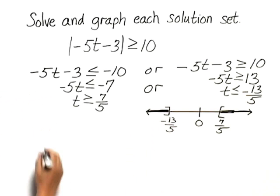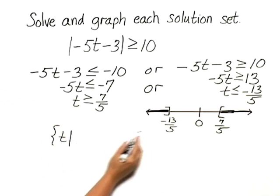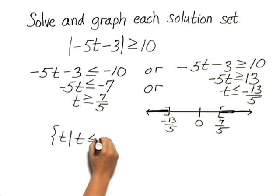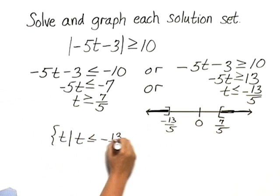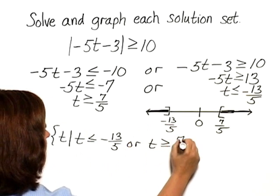So the solution set written in set-builder notation is the set of all t such that, and I'll write this part first, t is less than or equal to negative 13 fifths, or t is greater than or equal to 7 fifths.